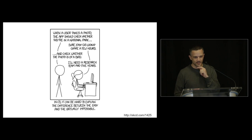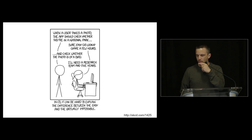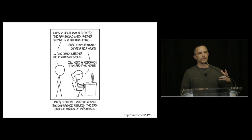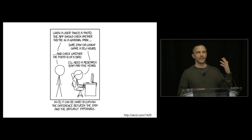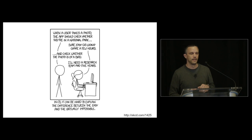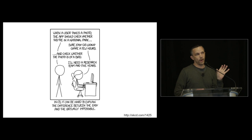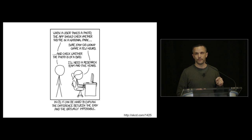XKCD has an interesting comic on this. The idea is that when you're explaining AI to people outside the field, it's hard to know what's easy and what's hard. This became known as the 'bird or park' comic strip, pointing out that knowing whether someone took a photo in a national park is considered easy — basically knowing the geotag. But knowing whether a photo contains a bird was actually hard at the time, and now it's considered easy. The part that's still quite difficult is knowing which species of bird — and that's the problem we're tackling.